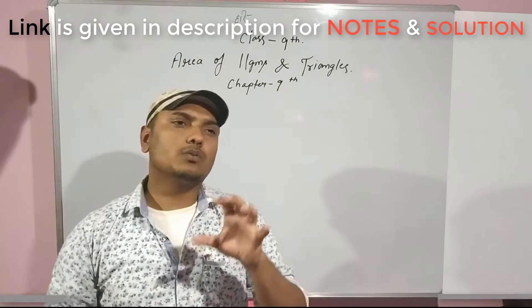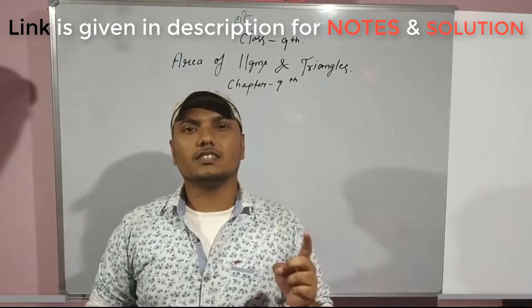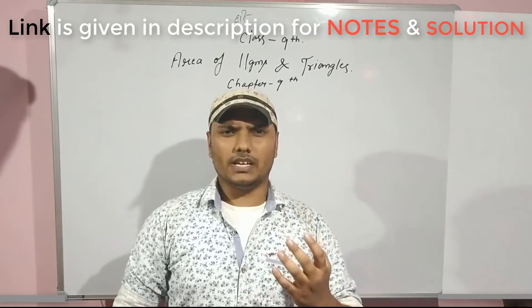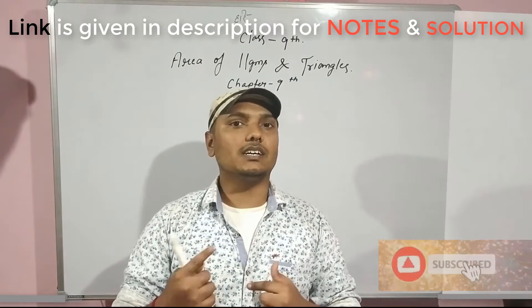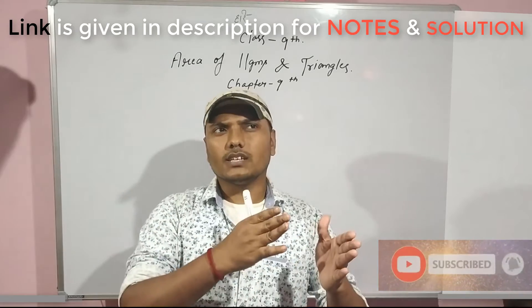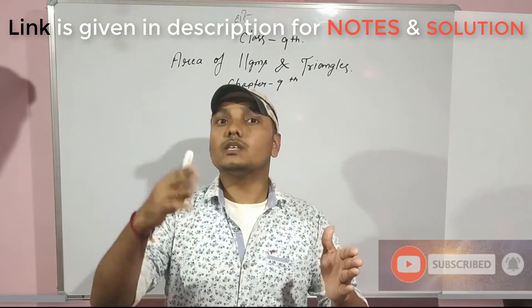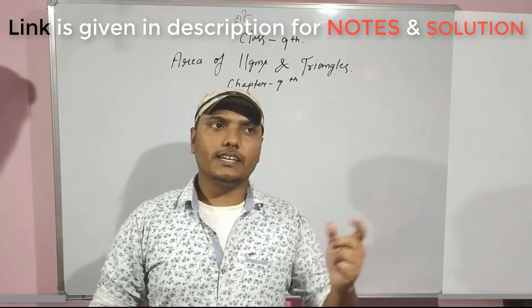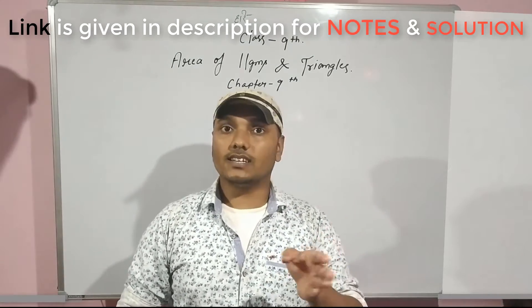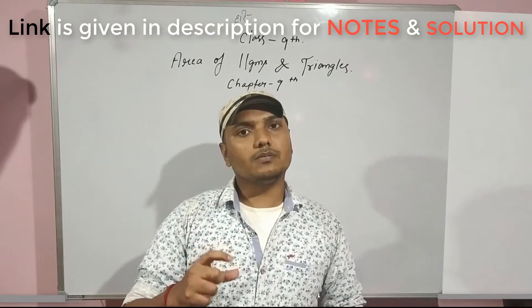First of all, we will remember some terms. From the quadrilateral chapter, we learned about congruence. We learned the congruence criteria of triangles: side angle side, angle side angle, RHS, side side side. These terms will help us.